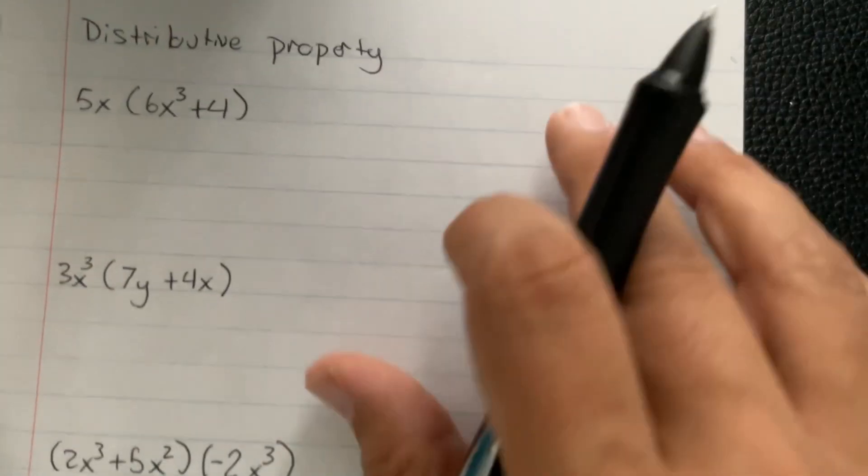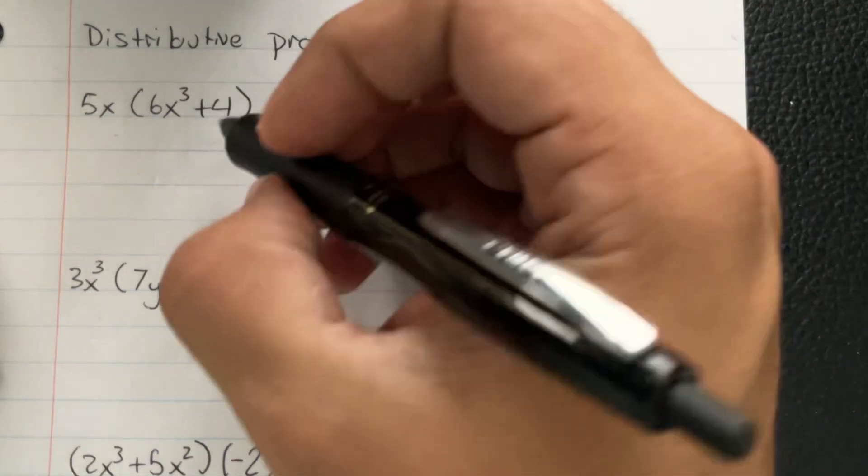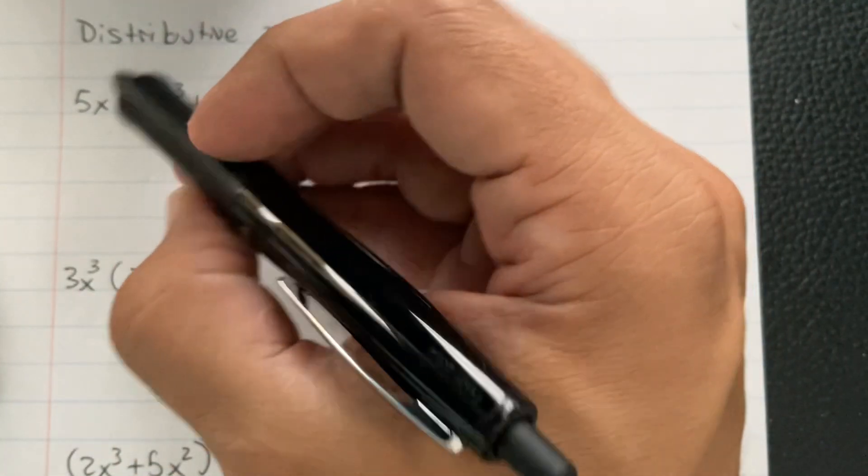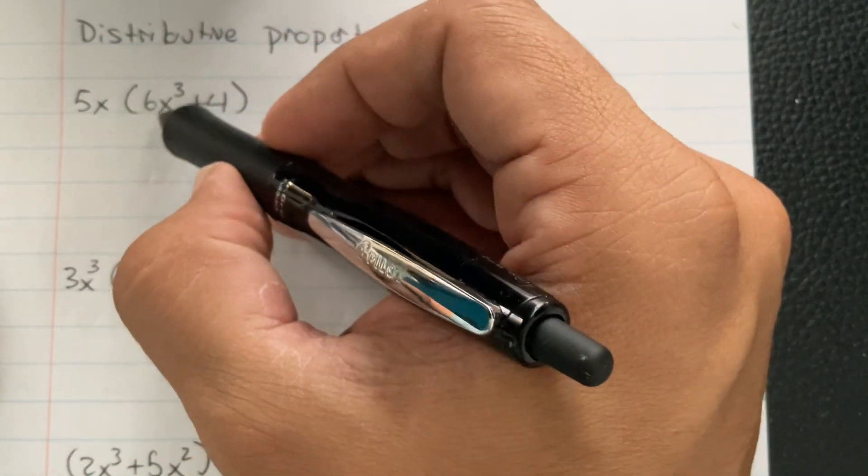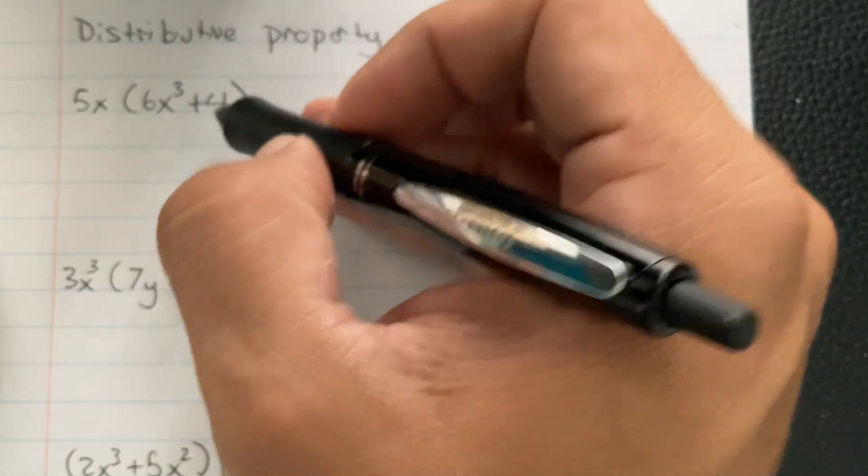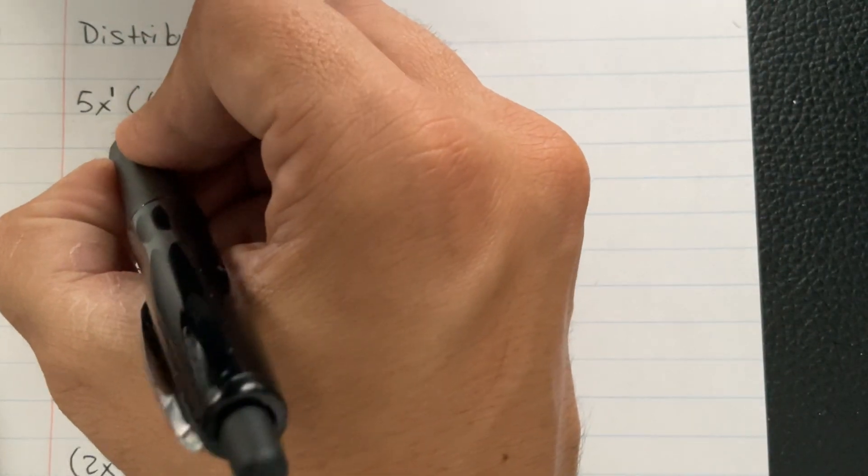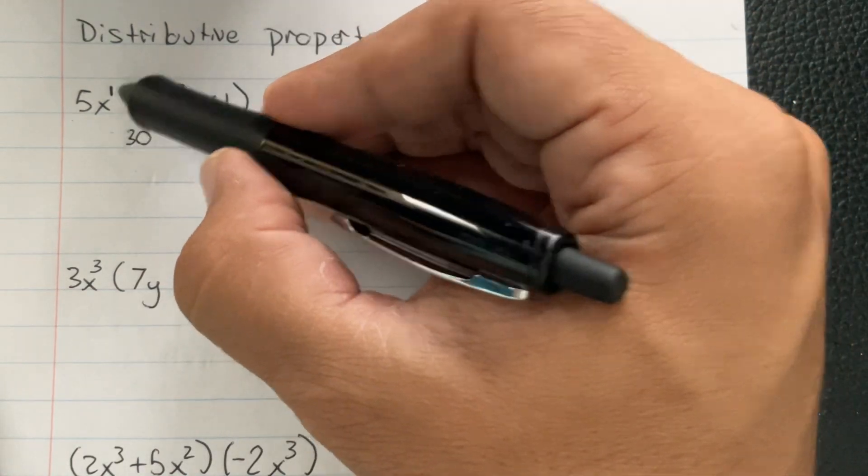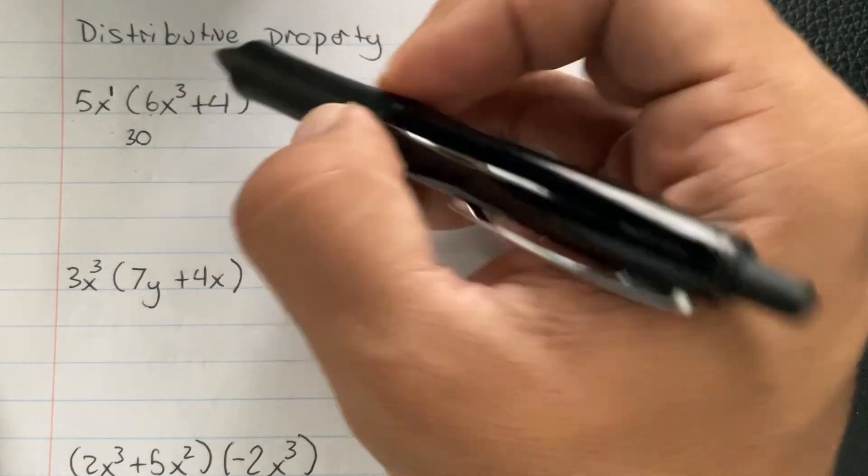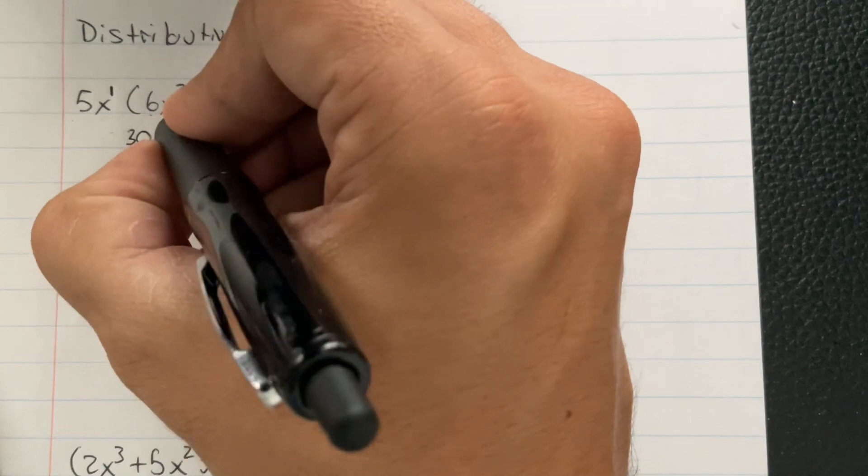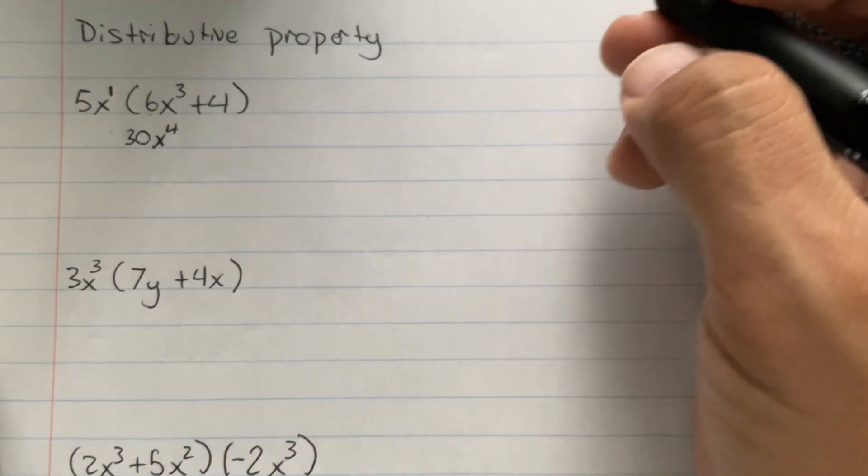Now we're just going to do some distributive property with exponents. So it's going to be 5x times everything in here. So I'm going to put a 1 here. So it's going to be 5 times 6 is 30. And then x¹ times x³ is going to make x⁴, because the exponents add.